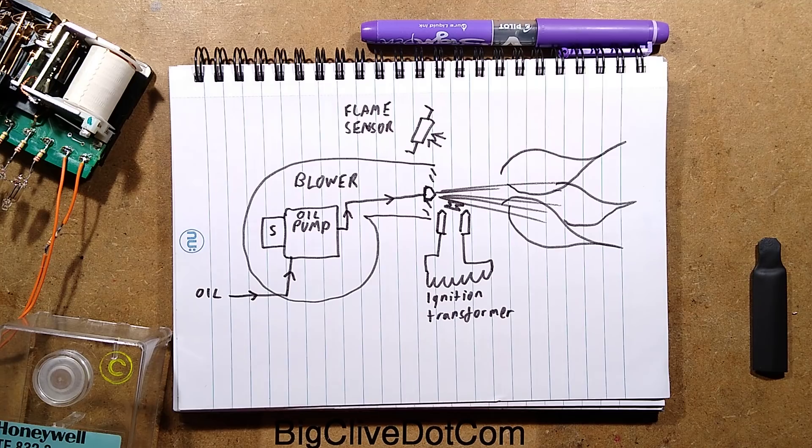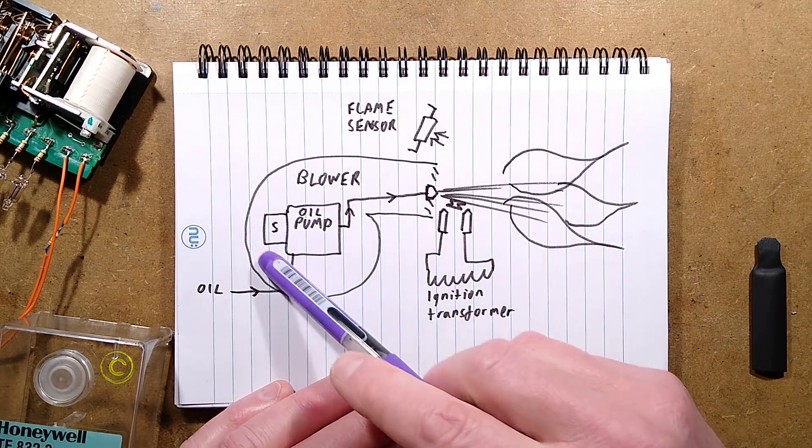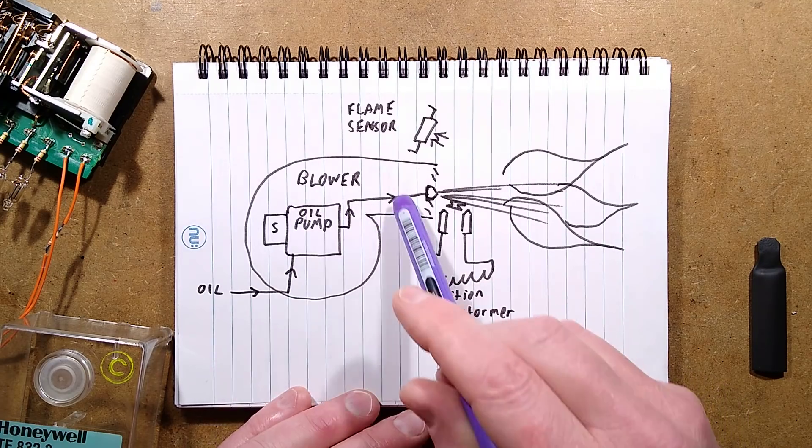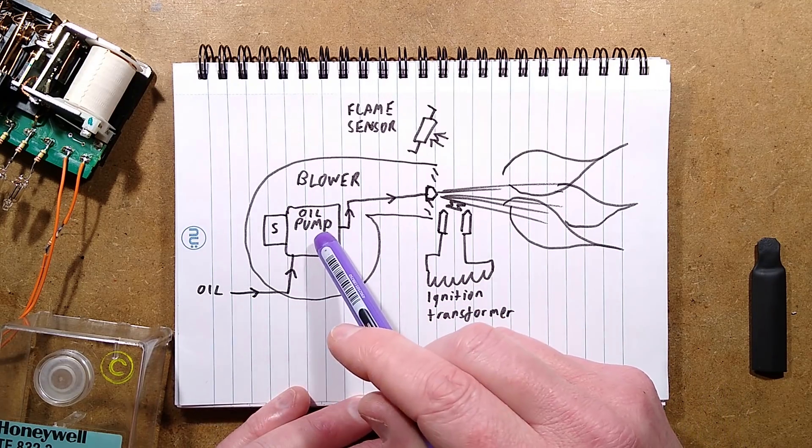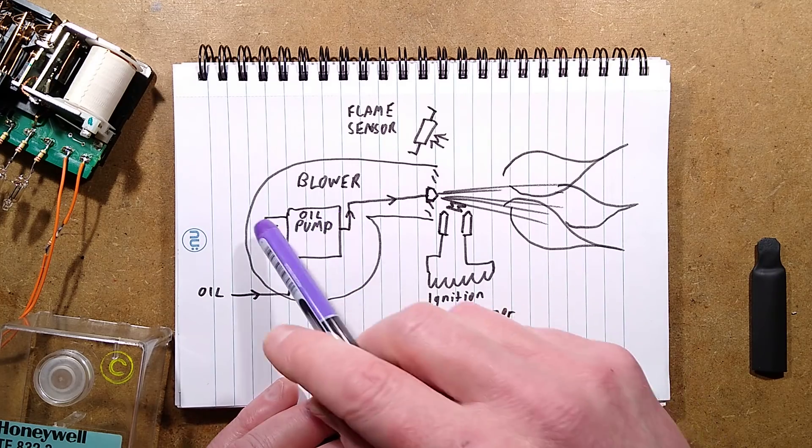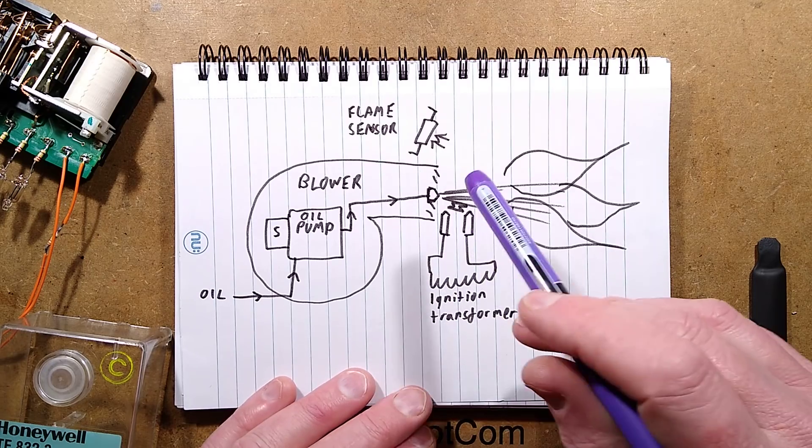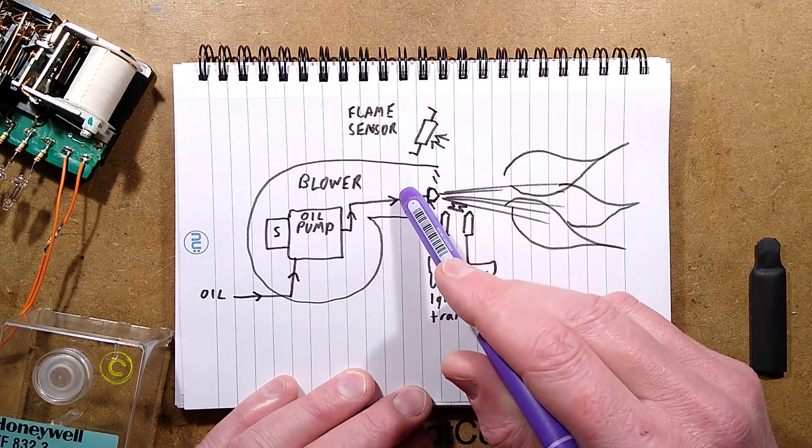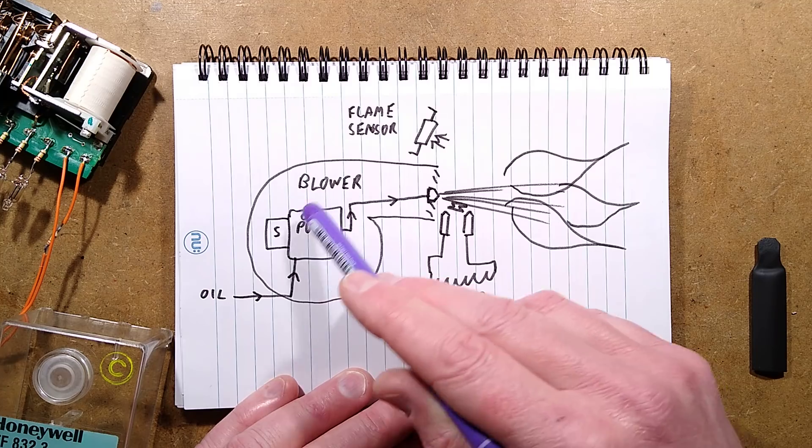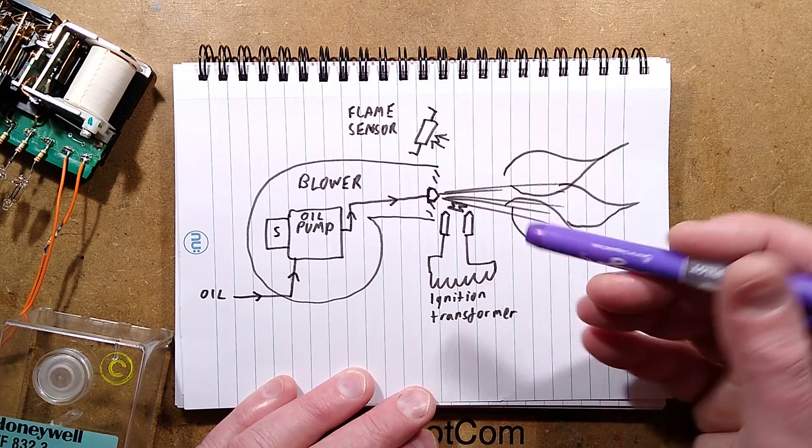But let's take a look initially at how the boiler ignition system is supposed to operate. A typical oil burner has a blower, and on the same shaft is usually an oil pump with a solenoid valve on it. Because that means that although the blower is running, it doesn't necessarily mean it is actually pumping oil out.